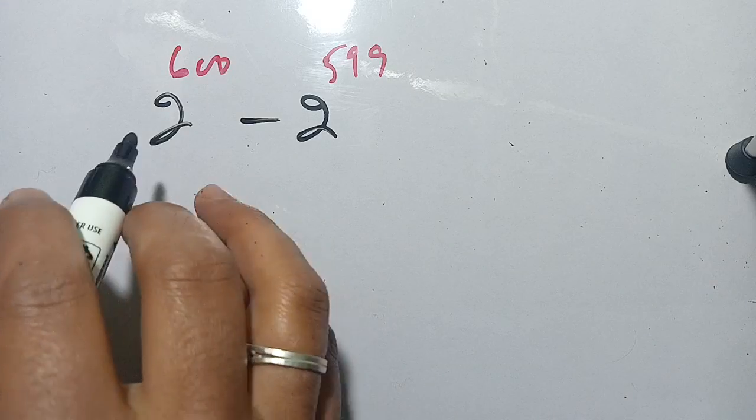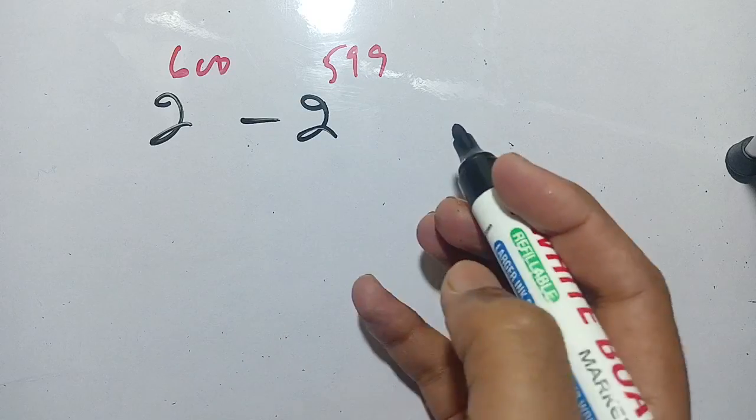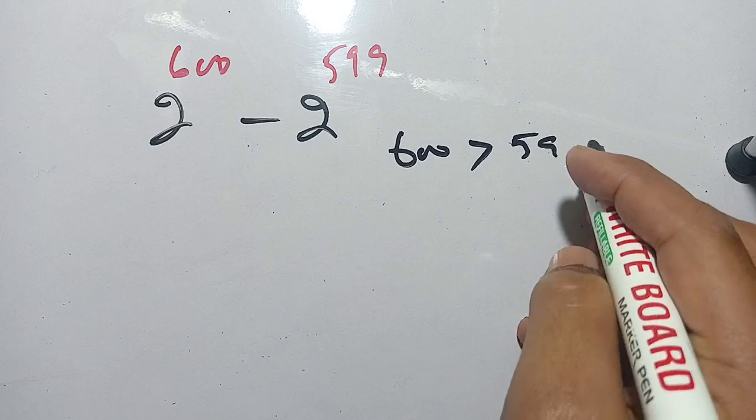Hello everyone, in today's video we are going to solve this problem: 2 raised to power 600 minus 2 raised to power 599. Before solving this, we know that 600 is greater than 599.